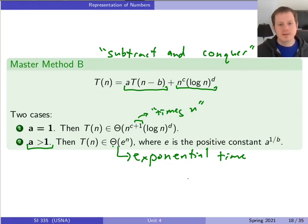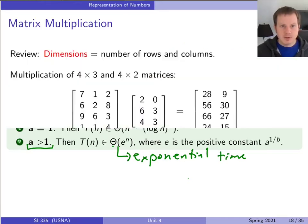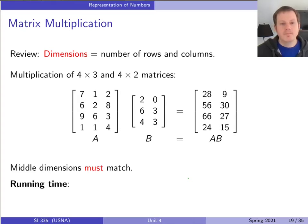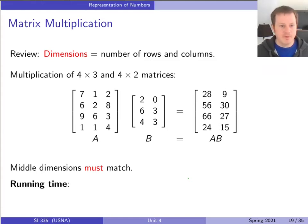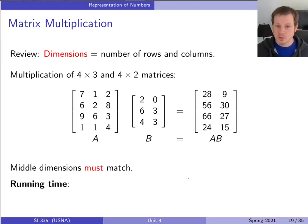So we have these two master methods. It takes a little care to apply them, but now we can use them to solve much more complicated recurrences without having to do the full series expansion ourselves. Let's look at one more example — another divide and conquer algorithm related to matrix multiplication — which will be a good case for actually using master method A. We'll also hit matrix multiplication again in the next unit.